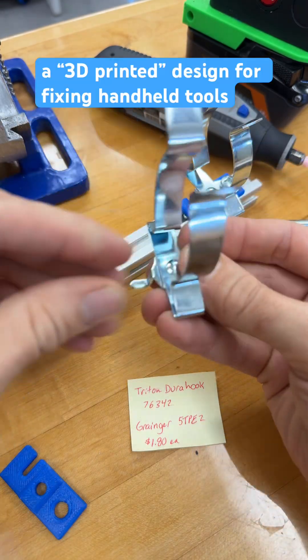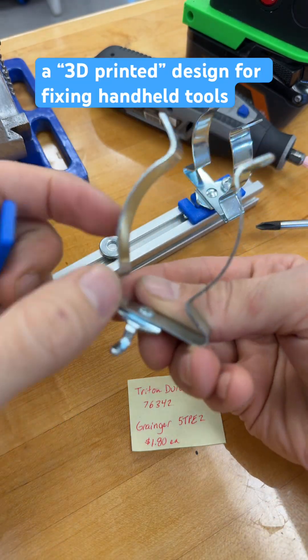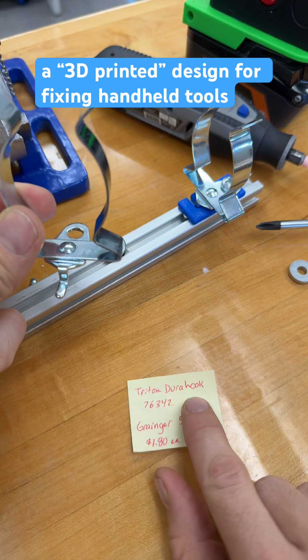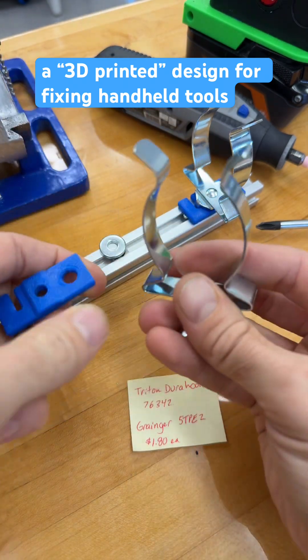Okay, I designed a machine you might like. I'll show you how to build it. It's a 3D printed machine starting with this thing, like a Triton Dura hook or Granger. These are two dollars each.